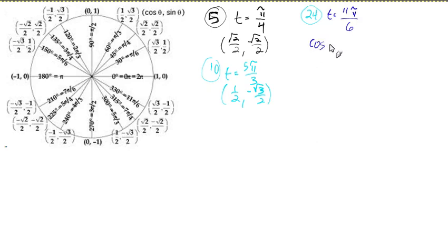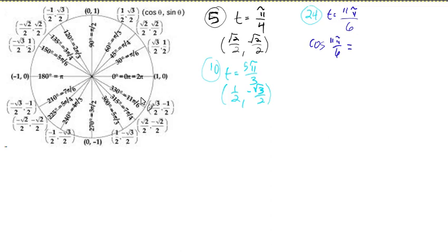So the cosine of 11 pi over six — can we find it? Here's 11 pi over six. They've made a nice side note that the cosine is the x value. That's the cosine of a point on the plane, x over r, and r is always one on the unit circle — that's why it's called the unit circle. So the cosine of 11 pi over six is root three over two.